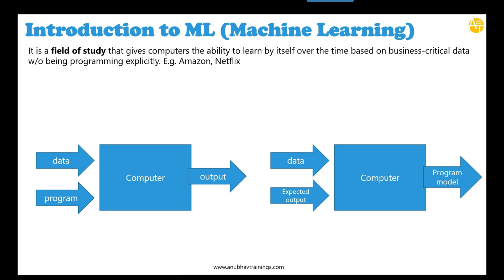Based on previous data, computers in the future will be able to produce similar results. In the past we used to give data and a program to the computer and it would give an output. But now in today's world, we only give the data and the expected outcome to the computer, and the computer proposes a program. We call this generated program a machine learning model, also known as a predictive model.